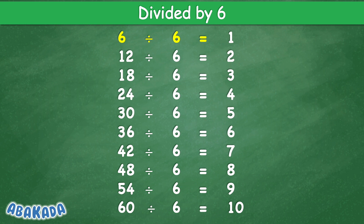Divided by 6: 6 divided by 6 equal 1, 12 divided by 6 equal 2, 18 divided by 6 equal 3, 24 divided by 6 equal 4, 30 divided by 6 equal 5, 36 divided by 6 equal 6, 42 divided by 6 equal 7, 48 divided by 6 equal 8, 54 divided by 6 equal 9, 60 divided by 6 equal 10.